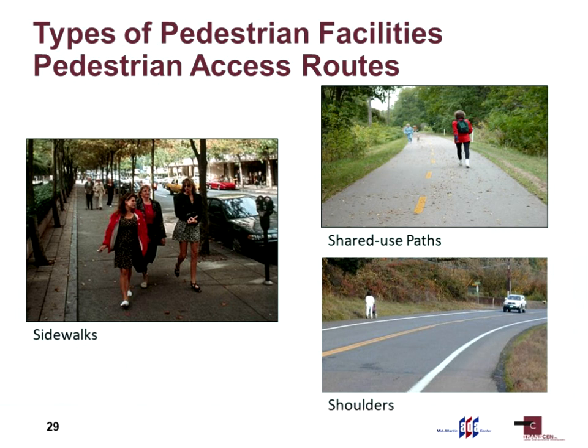The shoulder of a road can be a pedestrian access route. As an engineer, a shoulder is built to support the pavement that cars drive on. However, if you have an area marked for pedestrian use, or an area where you know pedestrians will be using it regularly based on origins and destinations in the area, you need to consider meeting the accessibility requirements.